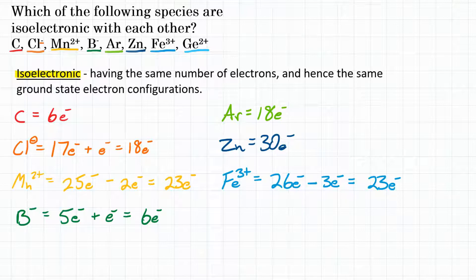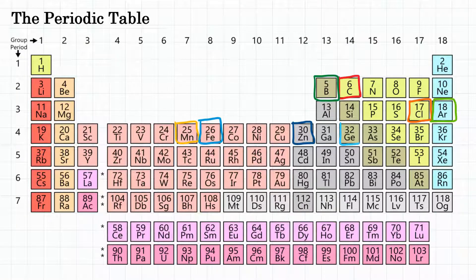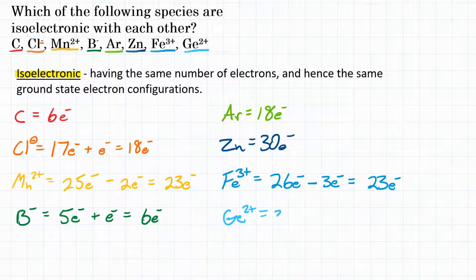And then lastly, we have germanium 2 positive. Ge 2 positive. Looking at our periodic table, we find germanium right here, element number 32. Normally it would have 32 electrons, but it is 2 positive. So we're going to take two of those electrons away. Subtract two electrons, and we have a total of 30.